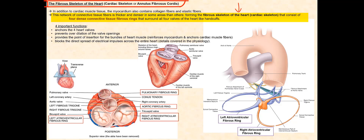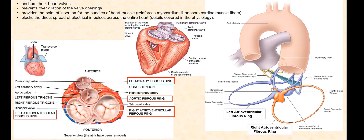They form four dense connective tissue fibrous rings, similar to handcuffs, as they surround and structurally support the four valves of the heart. The four dense connective tissue fibrous rings are the left atrioventricular fibrous ring, the right atrioventricular fibrous ring, the aortic fibrous ring, and the pulmonary fibrous ring.